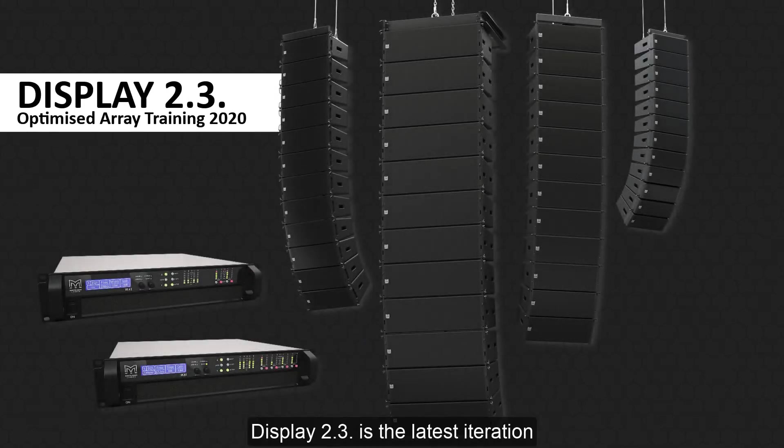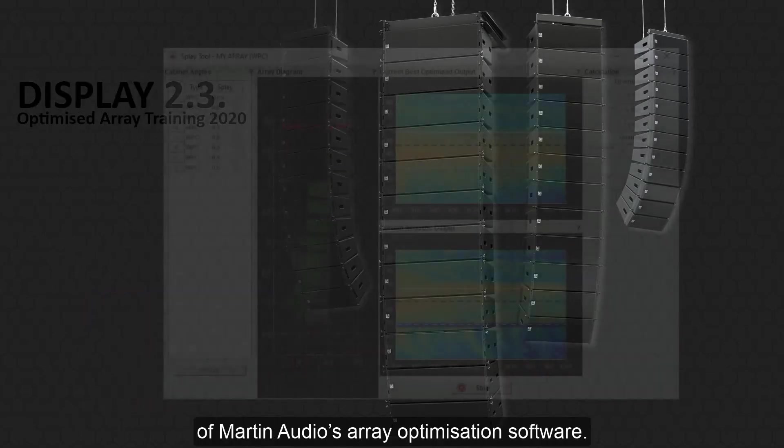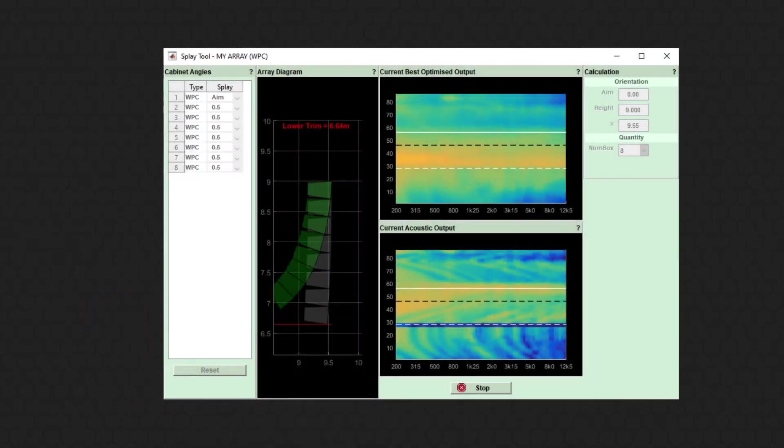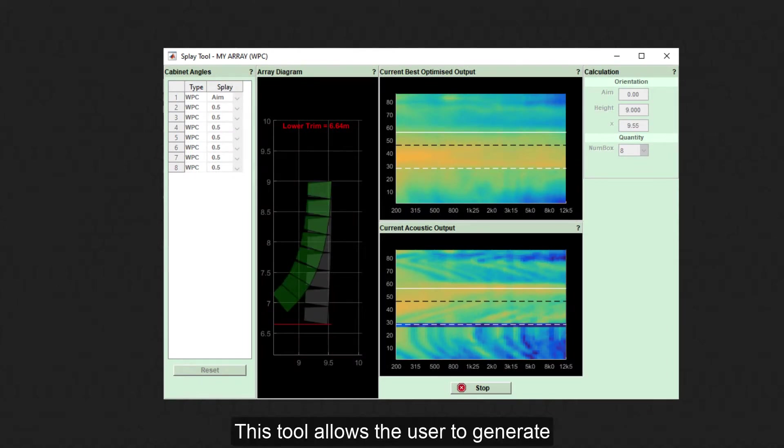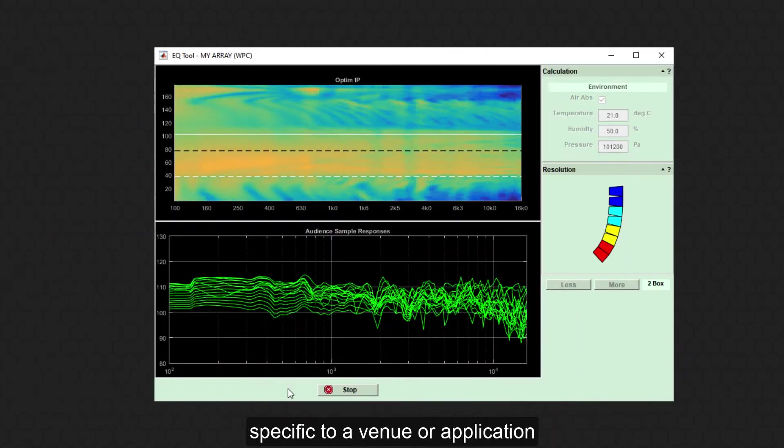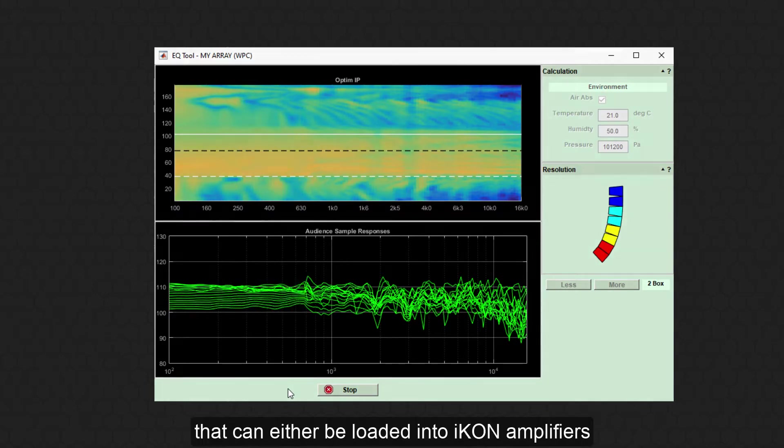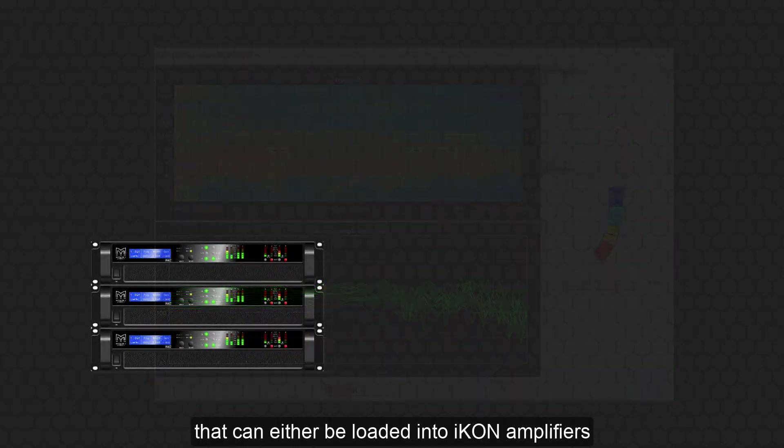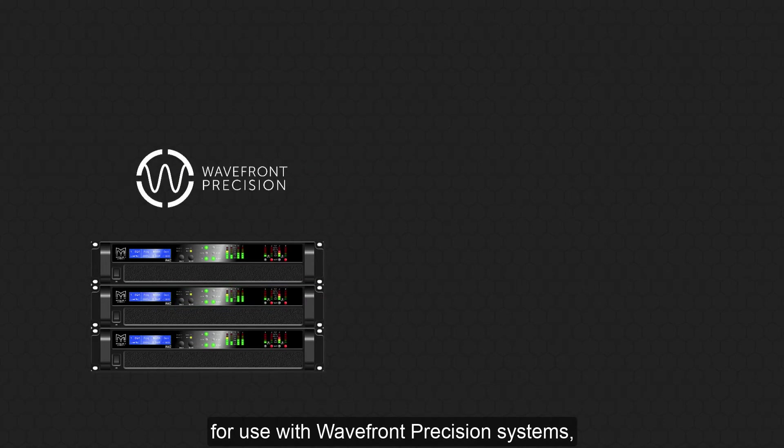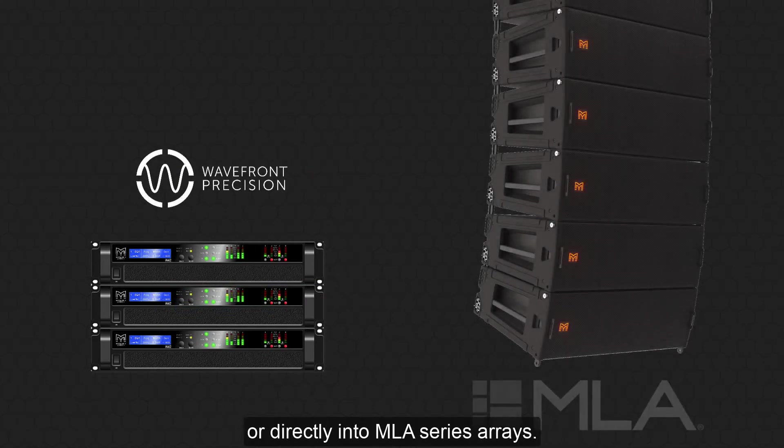Display 2.3 is the latest iteration of Martin Audio's Array Optimization software. This tool allows the user to generate array presets specific to a venue or application that can either be loaded into icon amplifiers for use with wavefront precision systems or directly into MLA series arrays.